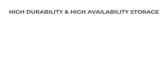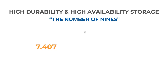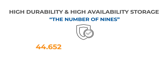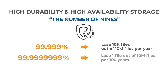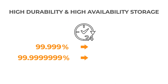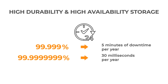Today, a common metric to represent durability and availability is using the number of nines. As an example, for durability, five nines represent losing 10,000 files out of 10 million files per year, and nine nines represent losing just one file every 100 years. For availability, five nines translates to about five minutes of downtime per year, and nine nines translate to just 30 milliseconds.